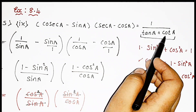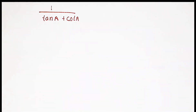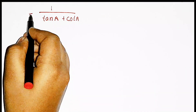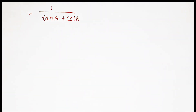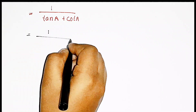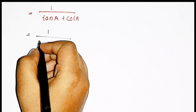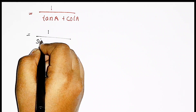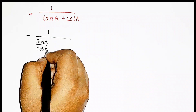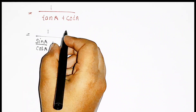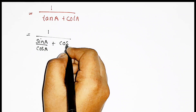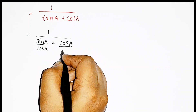Now let us solve the RHS, that is 1 by tan A plus cot A. I just wrote it separately so it will be easy for us to solve. So we can write it as 1 divided by — in the place of tan A we apply the formula sin A by cos A, and then plus, in the place of cot A we apply the formula cos A by sin A.